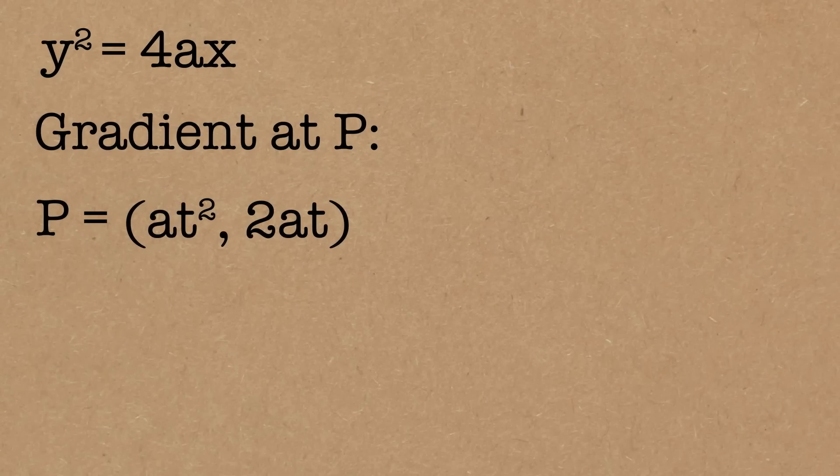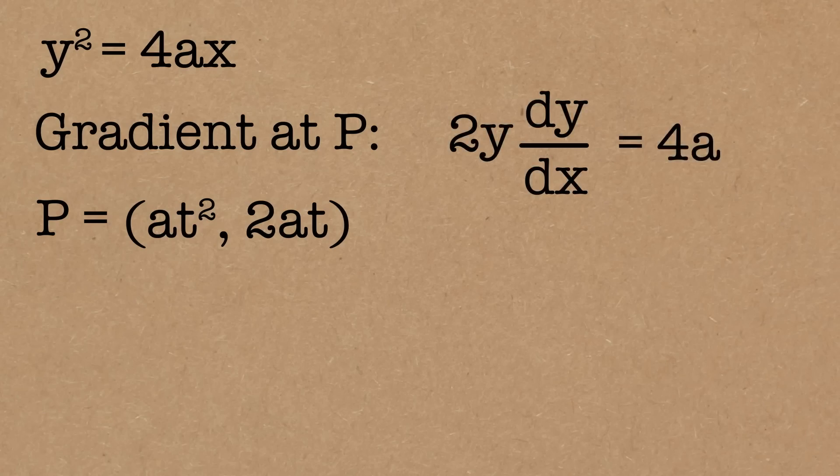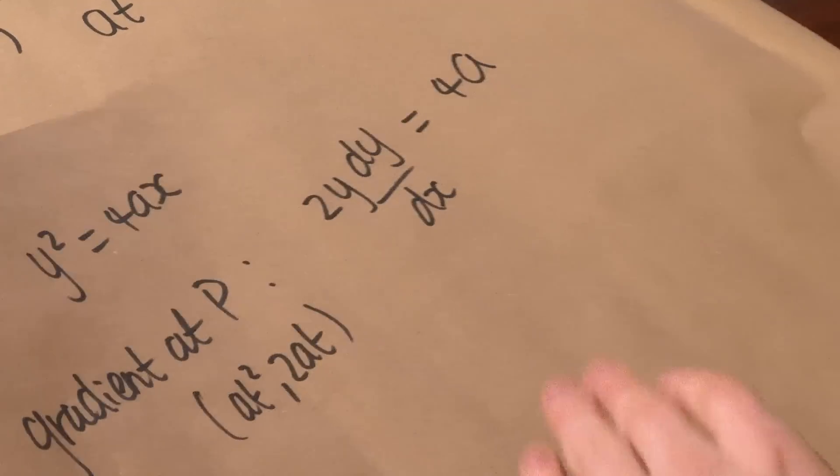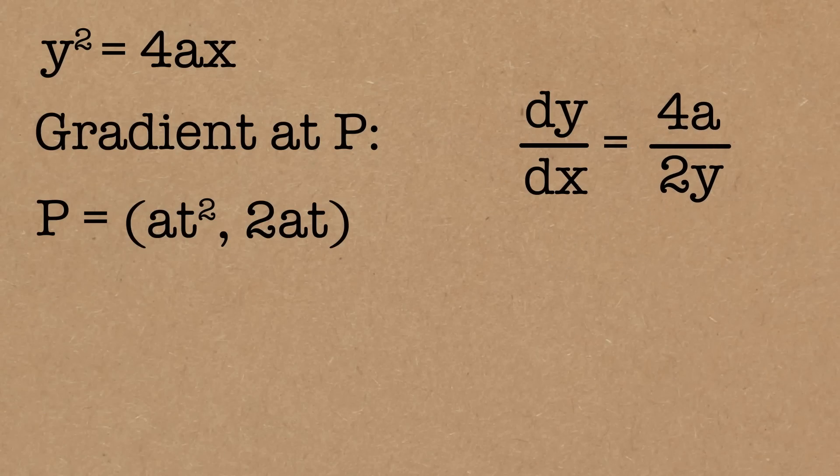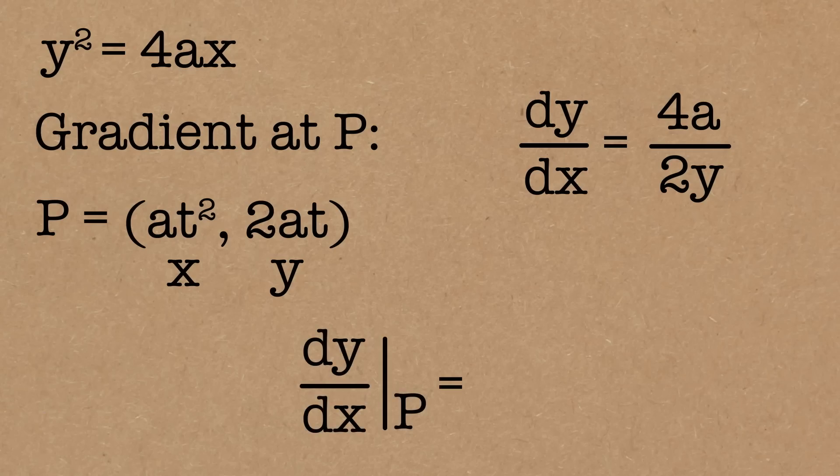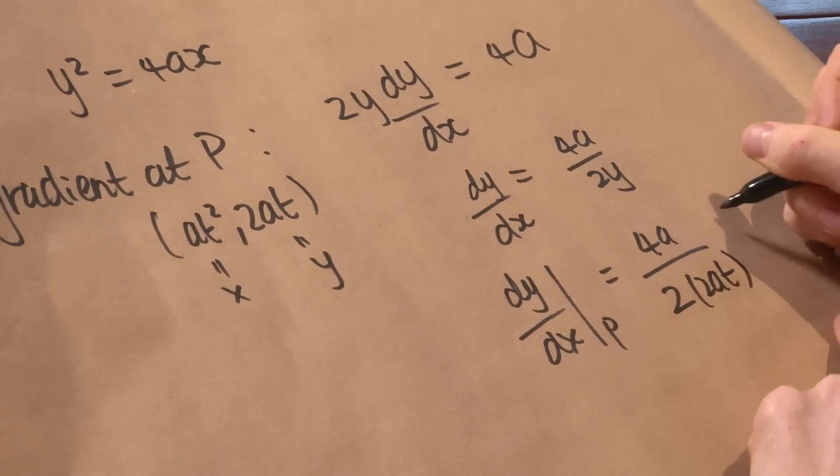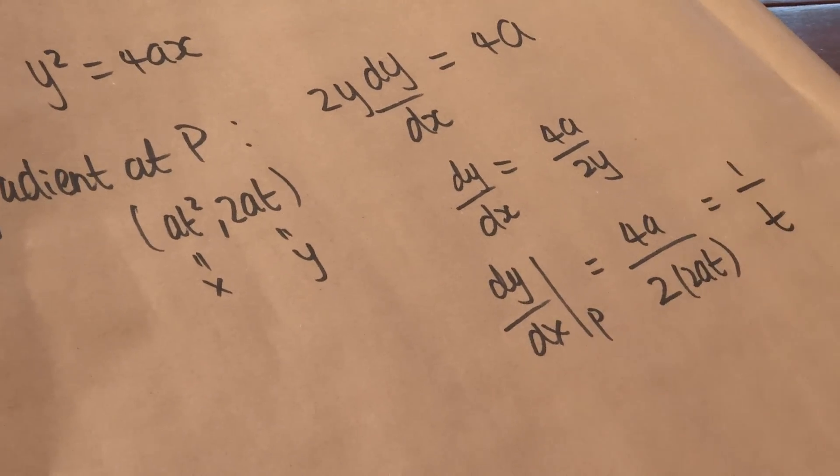So we have to do implicit differentiation, which tells us 2y dy by dx equals 4a. So that's just differentiating both sides with respect to x. And then we rearrange that, so that tells us that dy by dx is 4a over 2y. We want to know it at this point, where this is x and this is y, so we sub in that y value into here. So we can say the gradient dy by dx at the point P is 4a over 2 times the y value there, which is 2at. 4a over 4at, it's 1 over t.